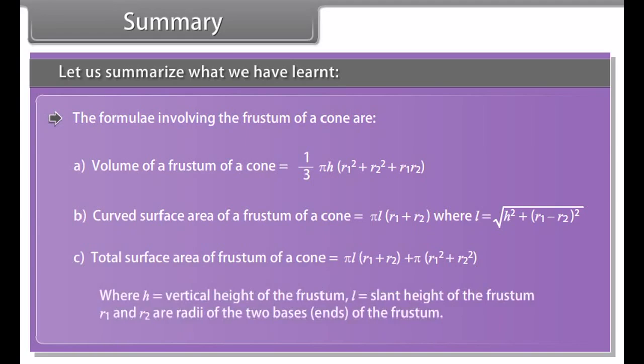Let us summarize what we have learned. To find the surface area of a solid made up of a combination of solids, we break it into smaller solids, find the curved surface area of each, and add all areas. To find the volume of a combination of solids, we break it into smaller solids, find the volume of each, and add them up. A frustum of a right circular cone is the solid formed when a cone is sliced by a plane parallel to its base and the smaller conical portion is removed. The formulae involve H (vertical height), L (slant height), and R₁ and R₂ (radii of the two base ends).